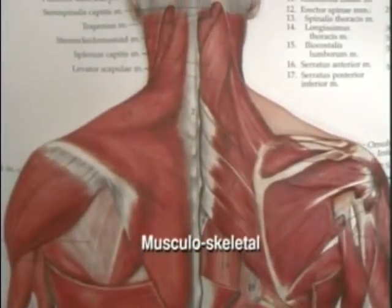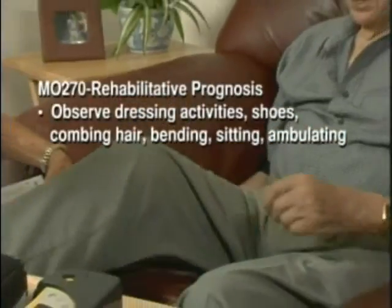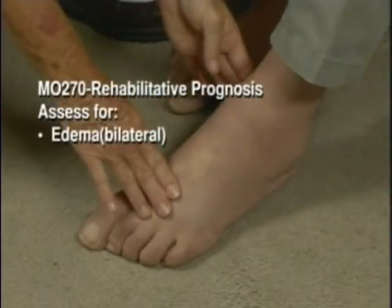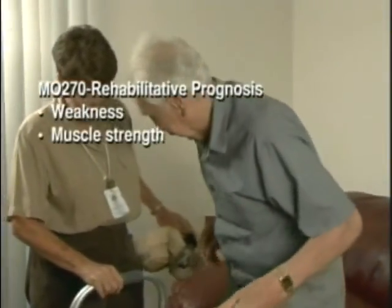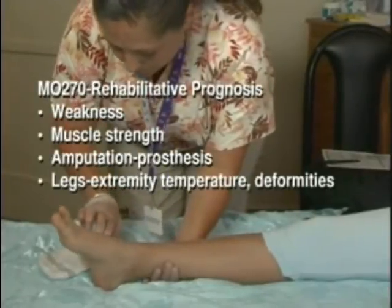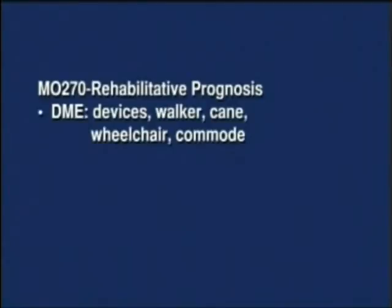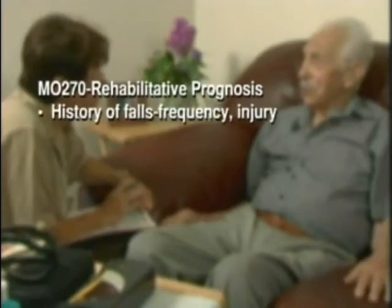As part of the musculoskeletal assessment, observe the patient dressing, putting on shoes, combing hair, bending, sitting, and ambulating. Assess for edema, any history of arthritis, gout, joint pain, swelling, or stiffness. Assess for weakness, muscle strength, and the presence of an amputation or prosthesis. Observe the legs, including extremity temperatures and deformities. Assess the use of durable medical equipment such as a walker, cane, wheelchair, and commode. Assess ambulation including holding onto walls, furniture, steadiness, distance tolerance, and breathing status. Assess the patient's history of falls, their frequency, and any associated injury. Identify the patient's rehabilitation prognosis for their functional status for MU-270.